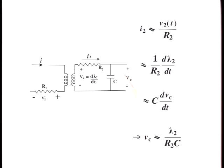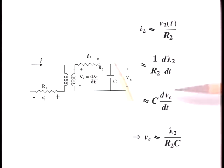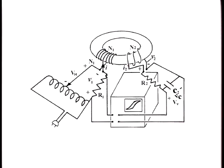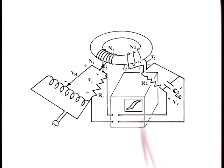With the capacitor essentially a short circuit, the current is approximately V2 over R2. From Faraday's law, the terminal voltage of the sensing coil is the time rate of change of the magnetic flux linking the coil. This current then charges the capacitor. By comparing these last two equations, we can see that the voltage across the capacitor is proportional to the magnetic flux linking the sensing coil. Thus, by connecting the terminals of the sensing coil through the integrator to the vertical trace of the oscilloscope, we make the vertical axis proportional to B. So we should see a display of B versus H on the oscilloscope.